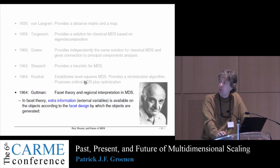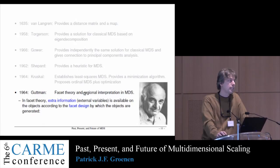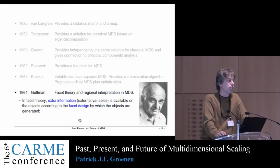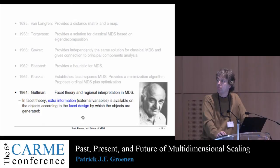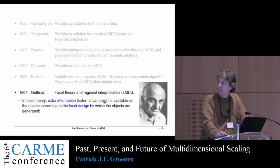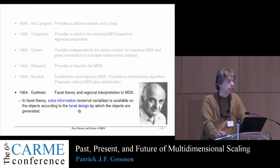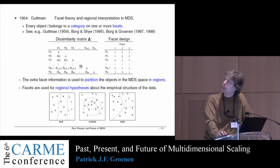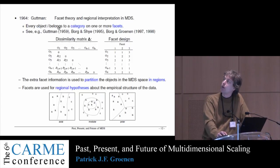The next topic is Louis Guttman, who had several contributions to multidimensional scaling. I will focus on facet theory and regional interpretations. In essence, facet theory uses extra information available on the objects — more or less like external variables in canonical correspondence analysis. Guttman wanted to generate the objects by design, so that every object, usually an item in a questionnaire, could be categorized among different facets.